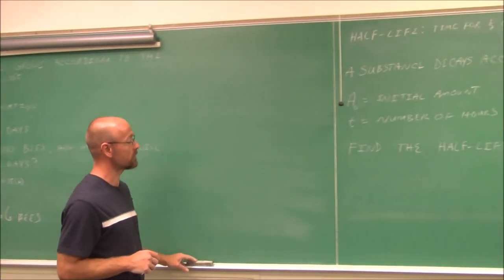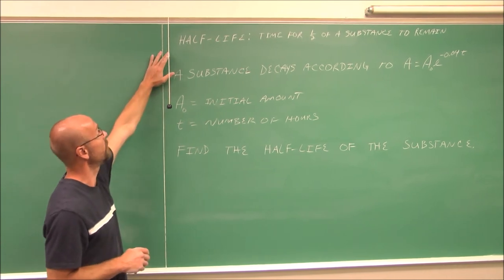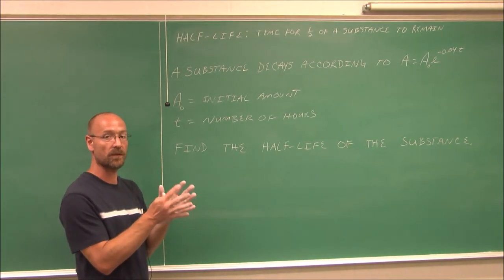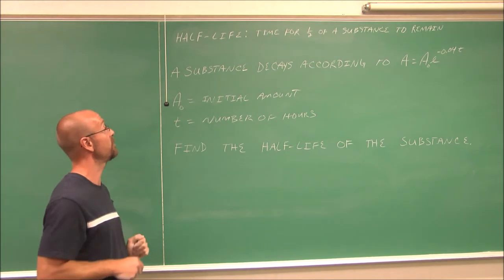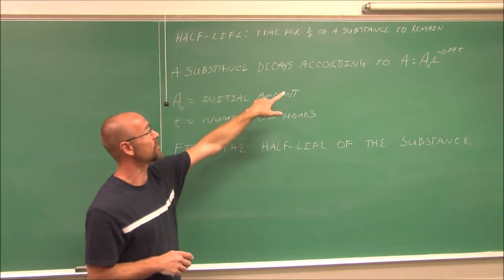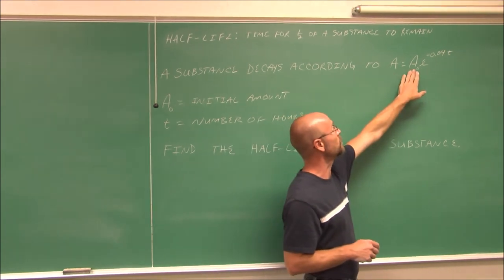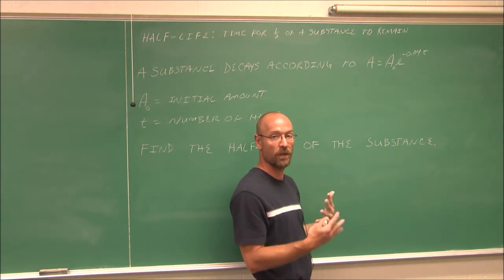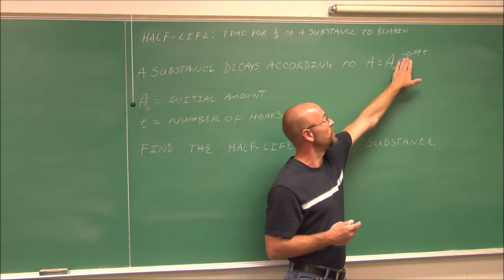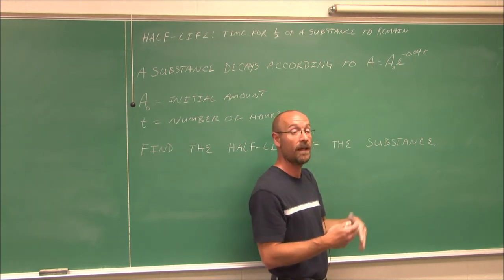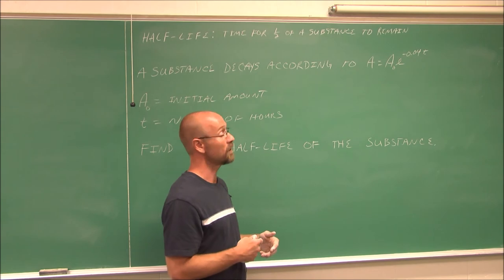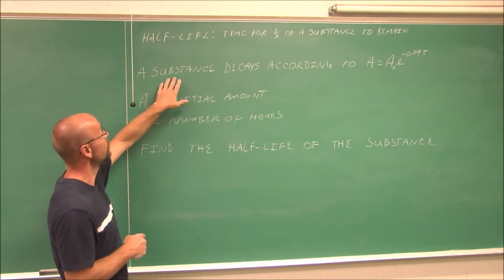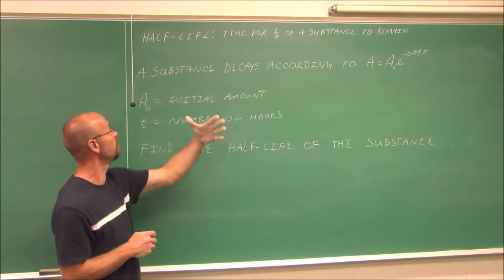We're going to look at one more example here. The half-life is defined as the time for half of a substance to remain. How much time does it take if a substance is decaying so that I have half of it left? A substance decays according to the equation a equals a0e to the negative 0.04t. One thing we'll notice, a negative exponent in these examples means decay, and a positive exponent means exponential growth.